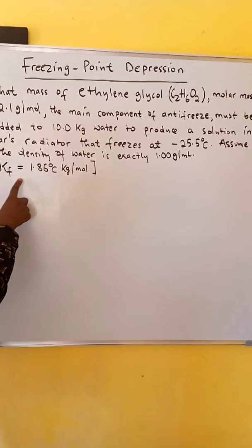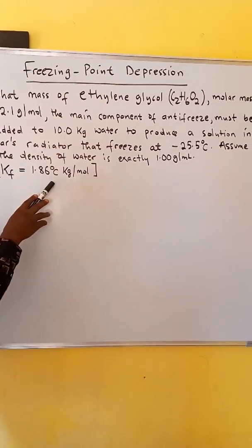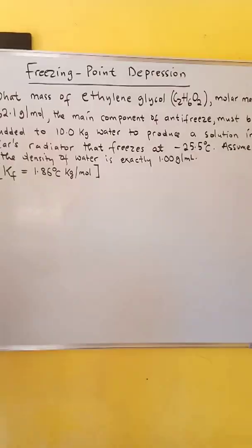Assume the density of water is exactly 1.00 gram per milliliter. Kf for ethylene glycol is 1.86 degrees Celsius kg per mole.